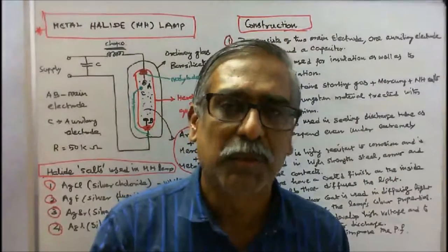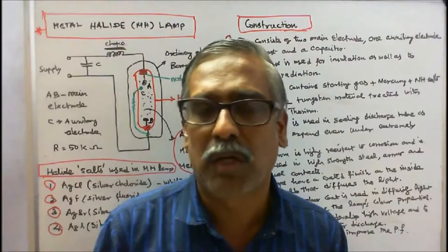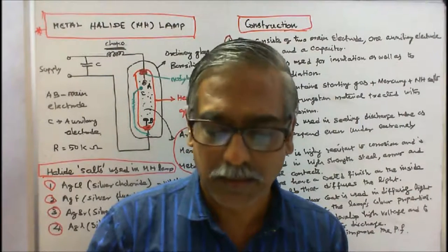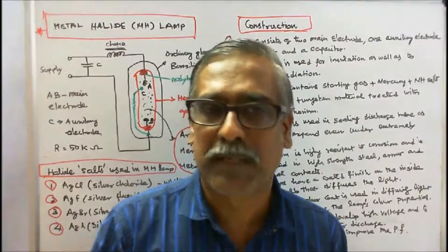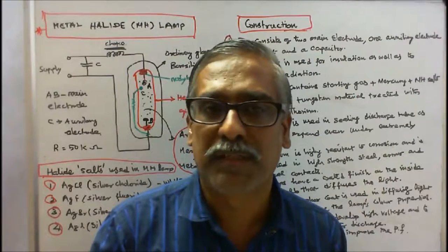But in addition to mercury, a number of iodides (iodide means salt) are added which fill the gaps in the light spectrum. These lamps are operated at higher temperatures and pressures.